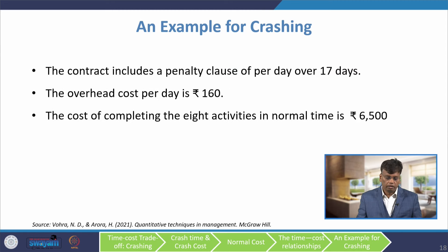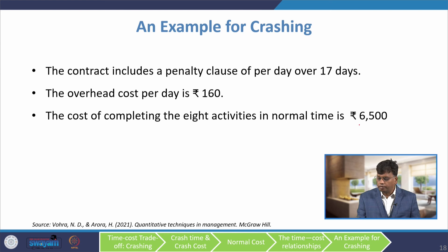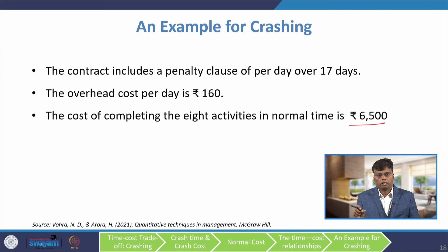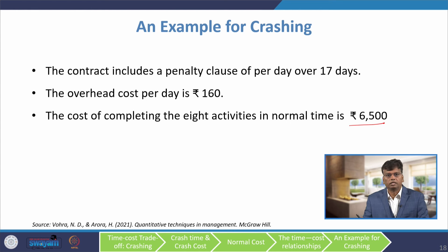The contract includes a penalty clause per day for completion beyond 17 days. The overhead cost per day is 160 rupees. The cost of completing the 8 activities in normal time is 6,500 rupees. The slope for each activity is already given, which is why the normal cost is given directly as 6,500. Otherwise, you would have to sum the normal cost of all activities.